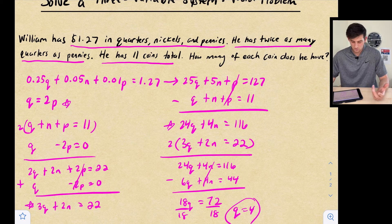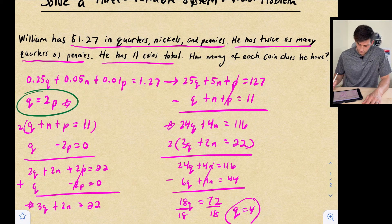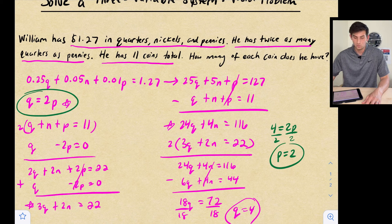Now the rest of this is pretty simple. Let's take and plug in this equation Q equals 2P. So now we have 4 equals 2P. We can divide by 2 and we get the fact that we have 2 pennies.